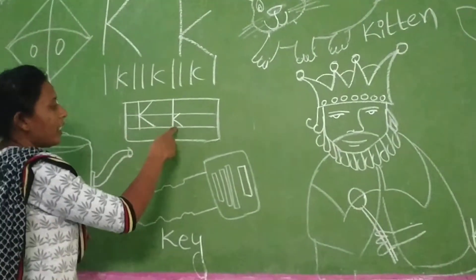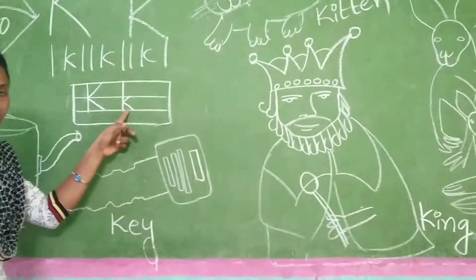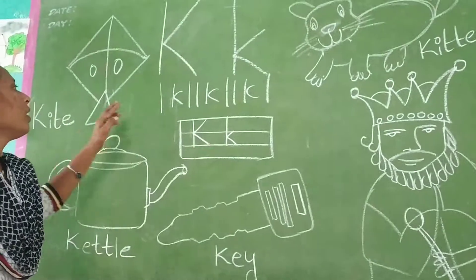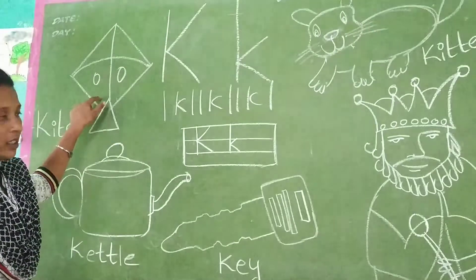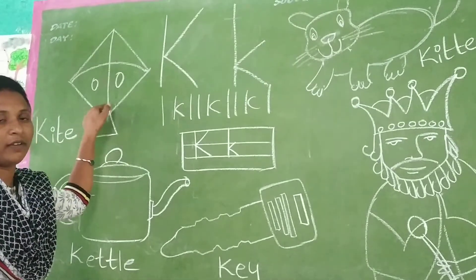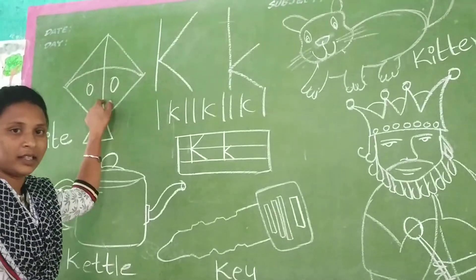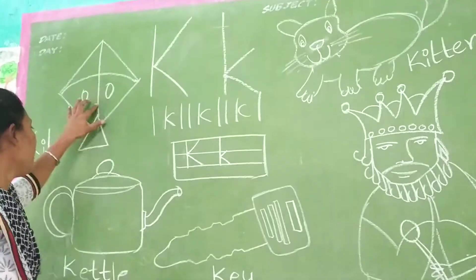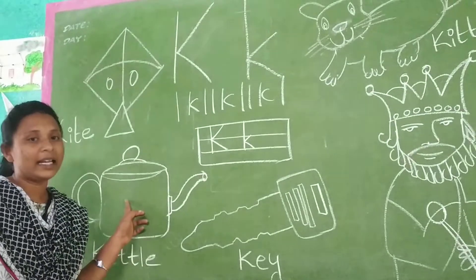This is capital K and this is small K — see the difference between capital K and small K. Now, K for Kite. Kites are very colorful. And K for Kite.